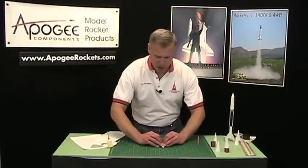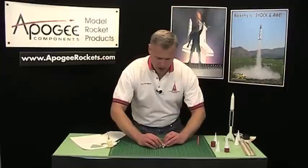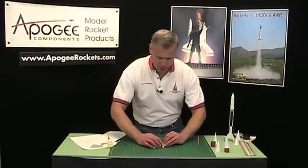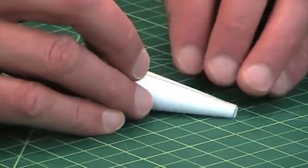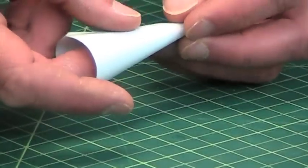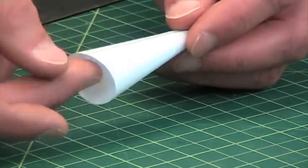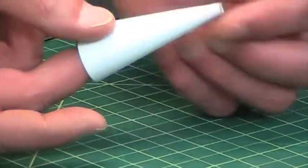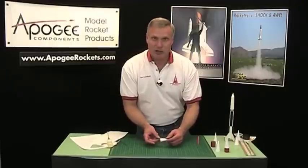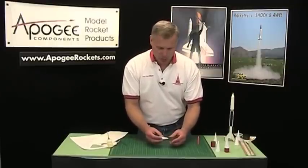Now we've got a video on the Apogee website about making transition sections, and in that one we do this same technique. This one is turning out really good. I must have been practicing. It does take a little bit of practice, so you might want to print up a few extra sheets of paper.